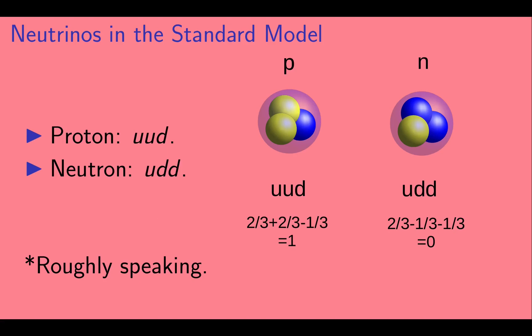Now let's look at the nucleons, protons and neutrons. Roughly speaking, a proton consists of two up quarks and a down quark. Their charges are two-thirds, two-thirds, and minus one-third, which add up to plus one, the charge of the proton. A neutron consists of one up quark and two down quarks. Their charges add up to zero.